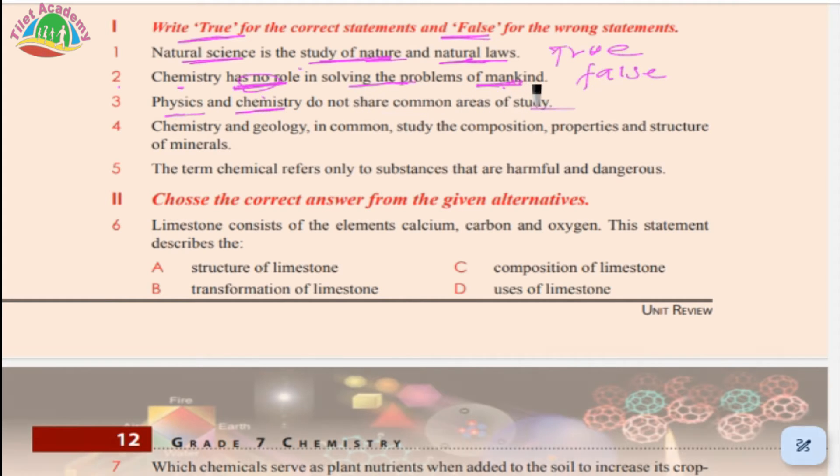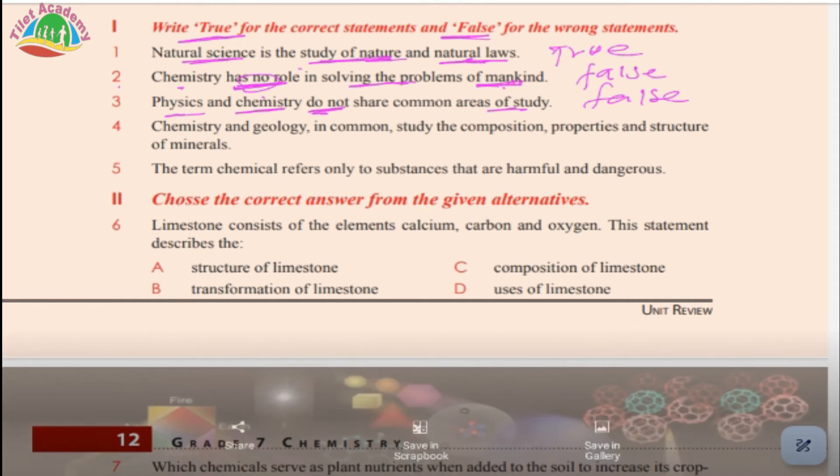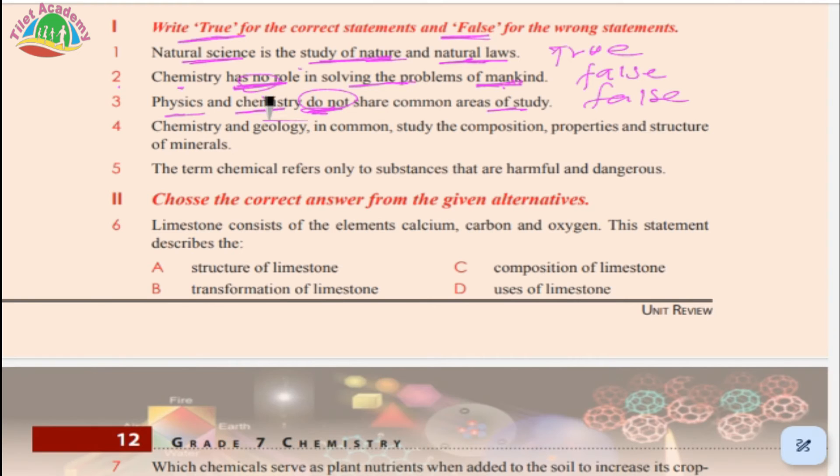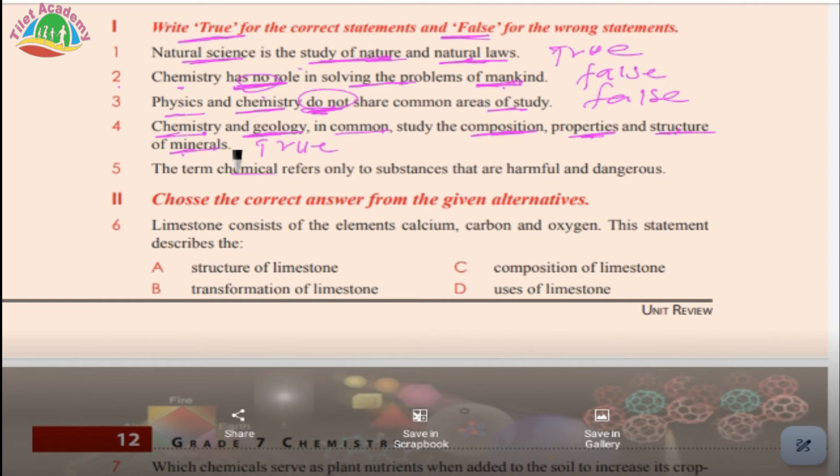Number three: Physics and chemistry do not share common areas of study. That's false - they do share common areas. Number four: Chemistry and geology in common study composition, property, structure, and minerals. That's true.